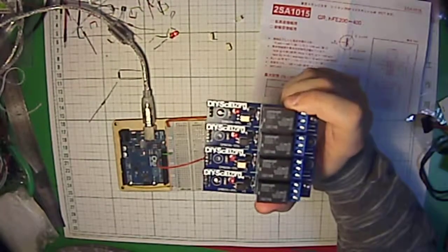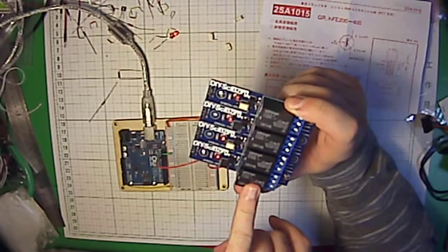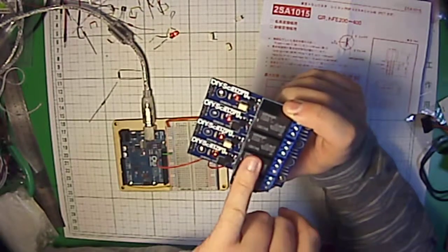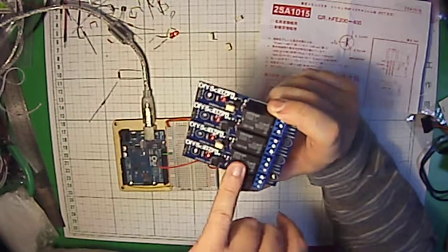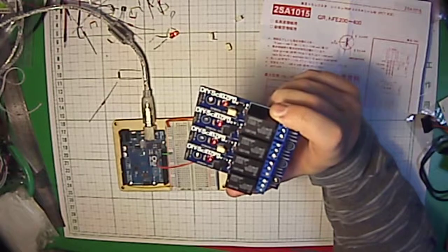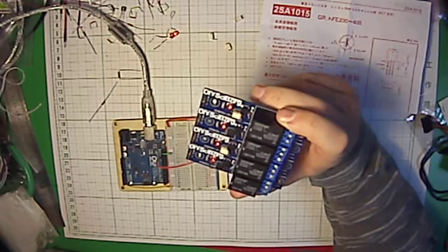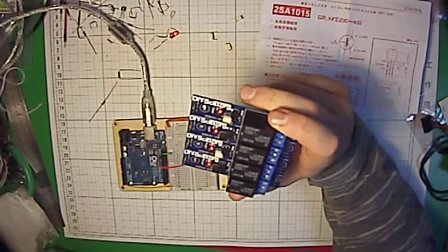It's an Omron G5 relay board. This uses Omron G5LE 5-volt DC relays, or we can also use some other brand products that fit the same footprint with the same specifications. This relay handles 250 volts AC at 10 amps.